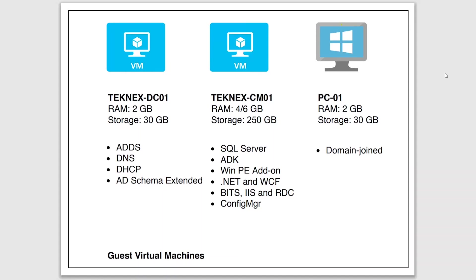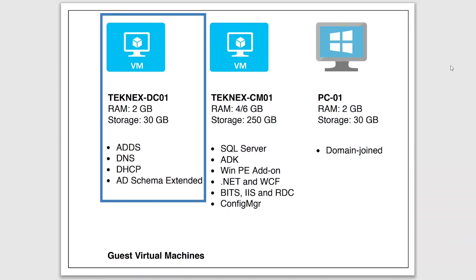Now let's have a look at our guest virtual machines. The first one is technext-dc01. This virtual machine will be provided 2 GB RAM and 30 GB storage. This will be our domain controller and it will have DNS, DHCP, and we will extend the Active Directory schema on it as well. This will be Windows Server 2019 Standard.